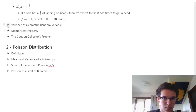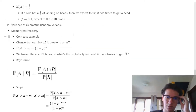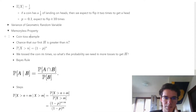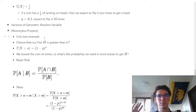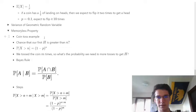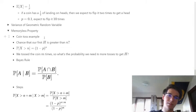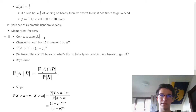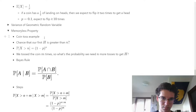Now we move on to the memoryless property of geometric distribution. The overarching idea is straightforward: if we flip a coin 5 times, what is the probability that we get heads on the 6th time? It's still 1/2 if it's a fair coin, because the previous trials have no influence on the current trial.